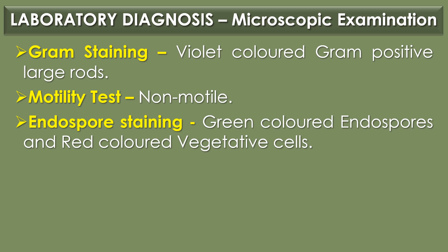In the motility test, it shows a non-motile result. In endospore staining, Bacillus anthracis shows green-colored endospores with central arrangement and red-colored vegetative cells.